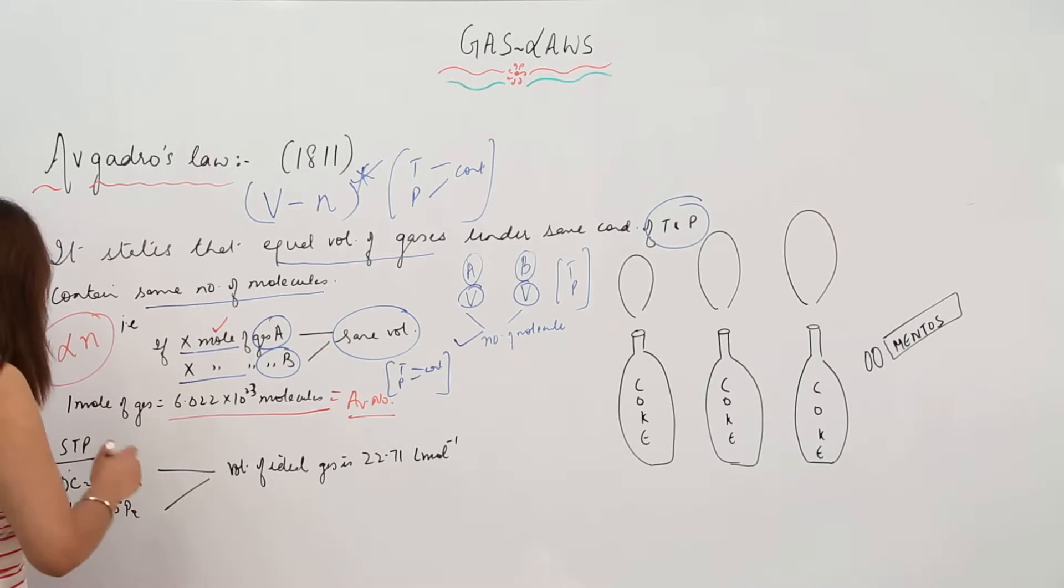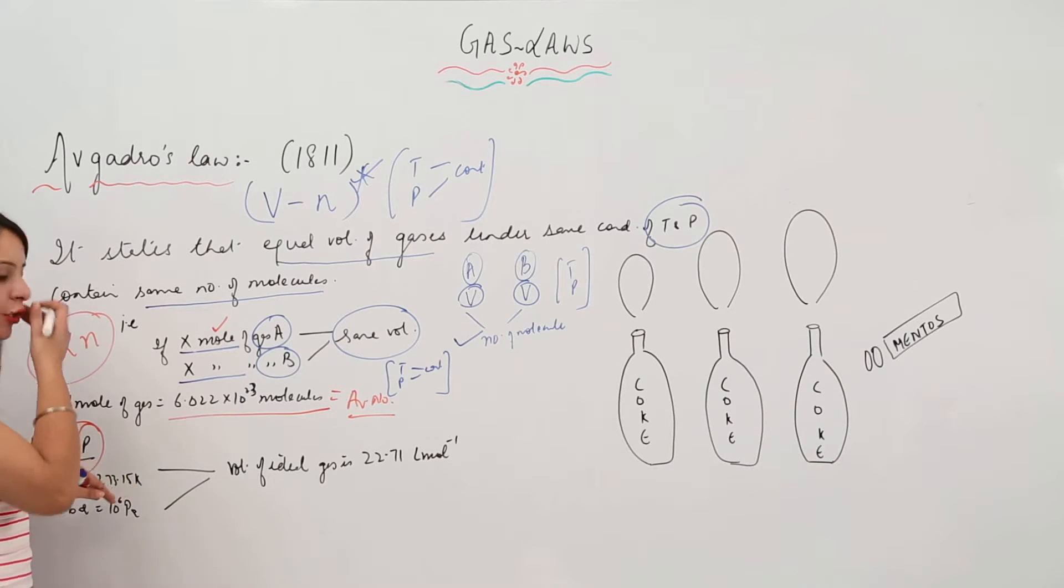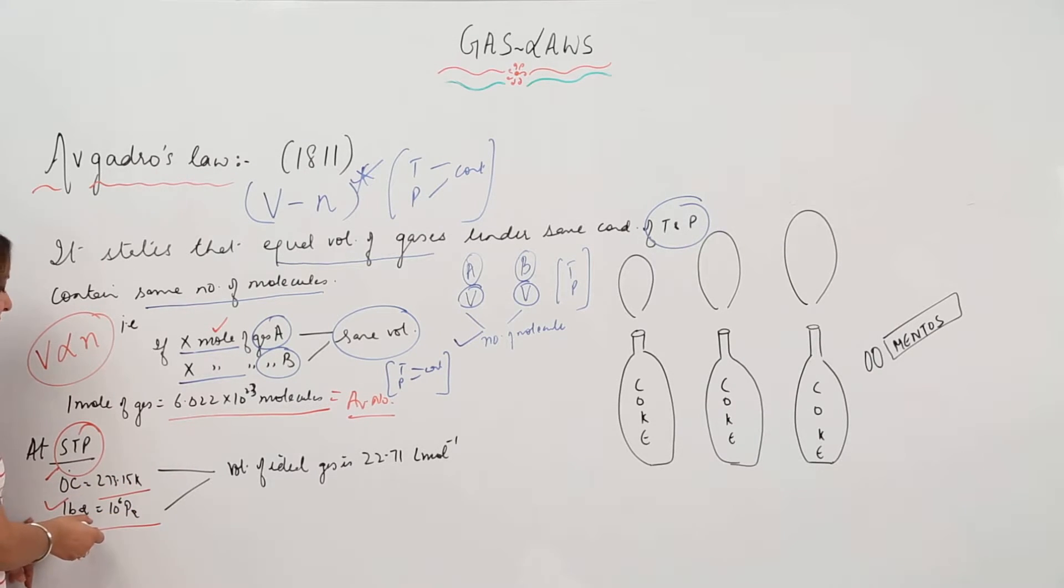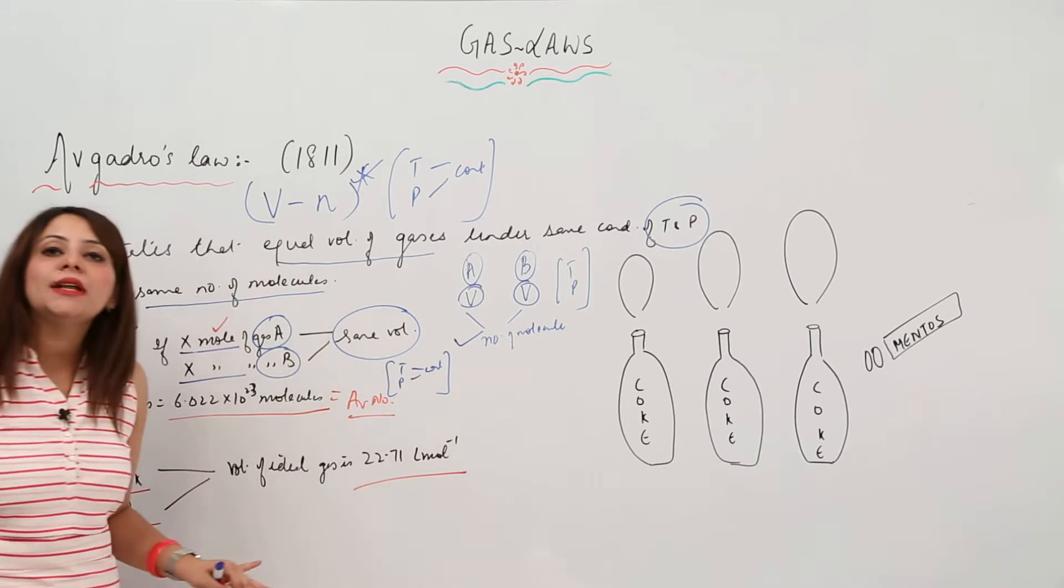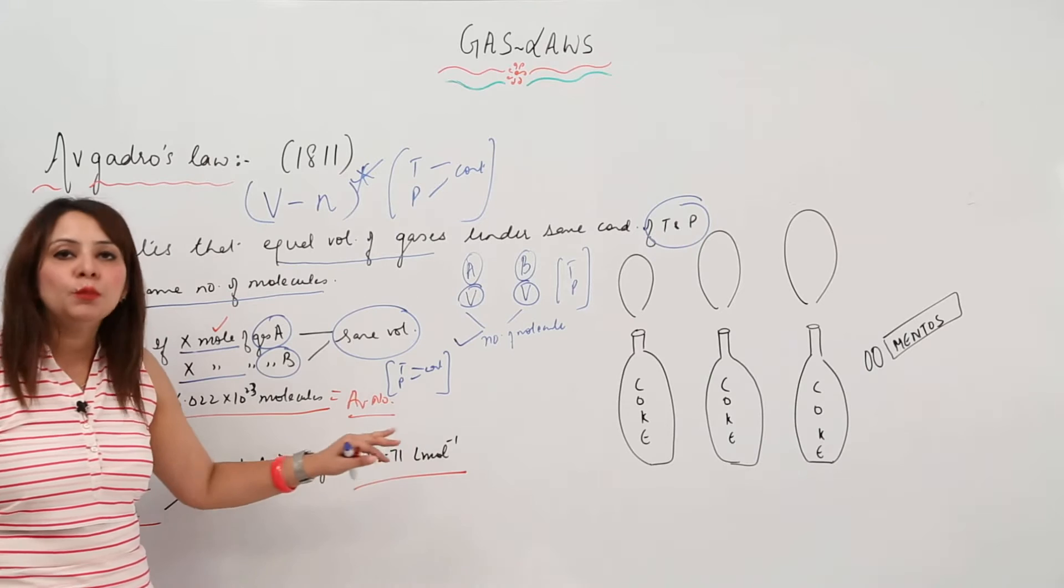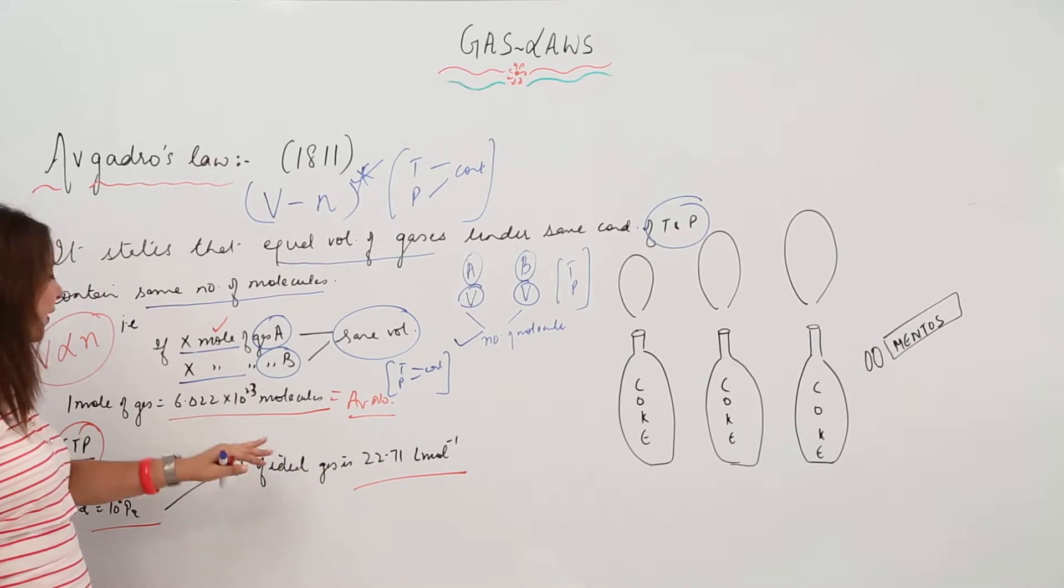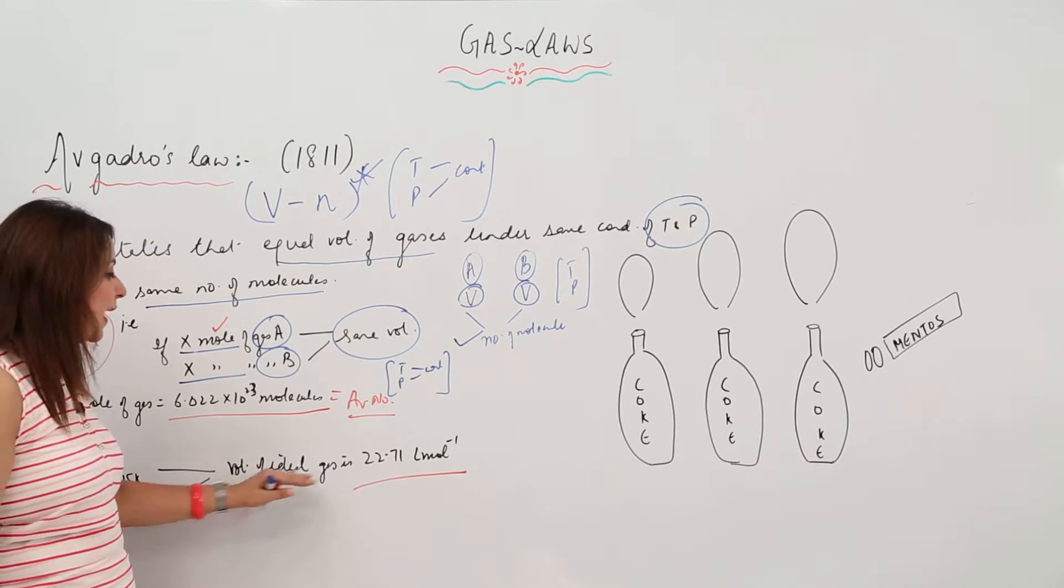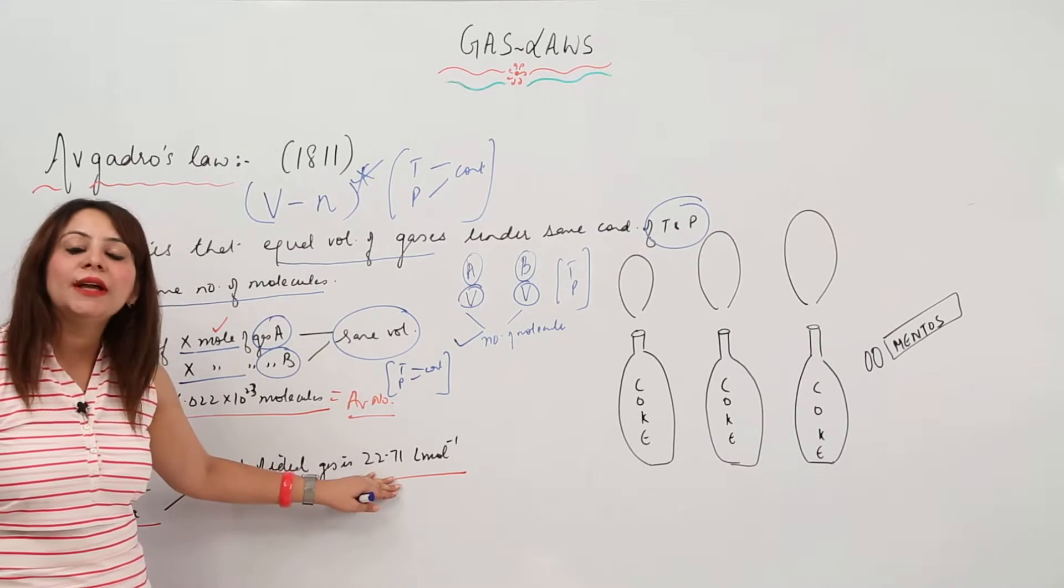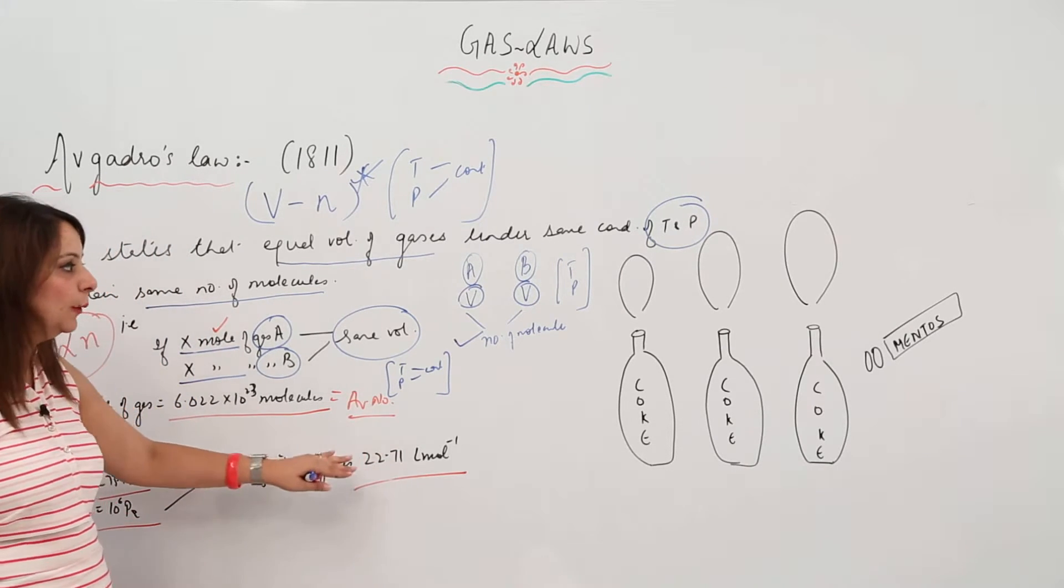At STP conditions - standard temperature and pressure, 0°C and 1 bar, or 273.15 Kelvin and 10⁵ Pascal - the volume for an ideal gas is calculated to be 22.71 liters per mole. That means one mole occupies 22.71 liters.